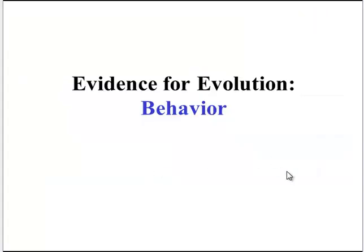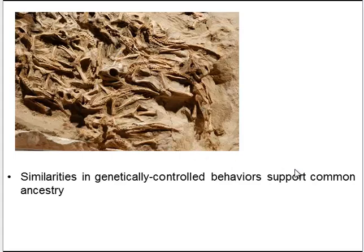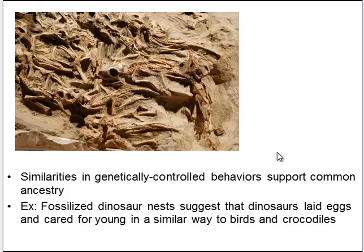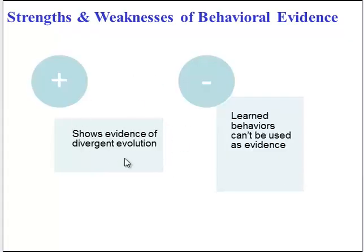Behavior can also provide evidence for evolution because some behaviors are genetically determined. For example, a fossilized dinosaur nest shows that dinosaurs might have reared their young the same way birds do today, providing evidence of common ancestry. Another example is the mating calls of frogs, which are genetically determined and can be used to show common ancestry between different frog species. Learned or acquired behaviors are not used as evidence for phylogeny.